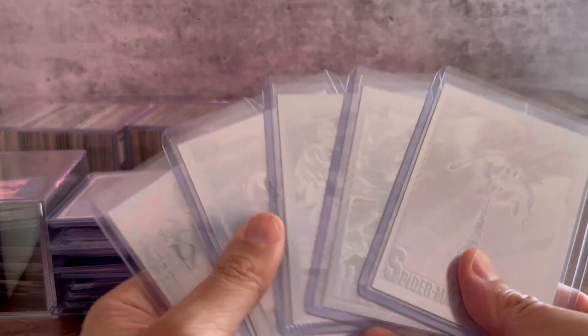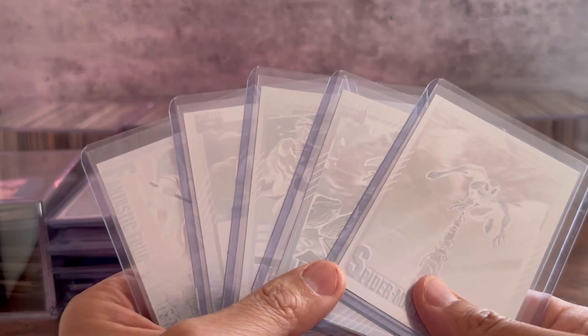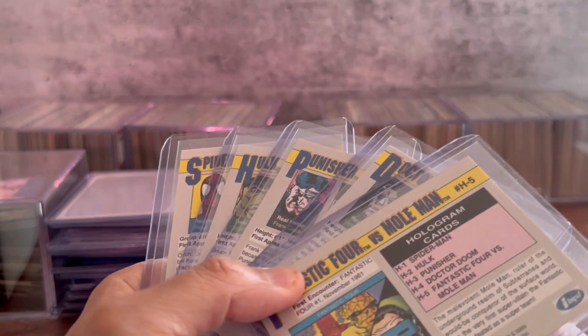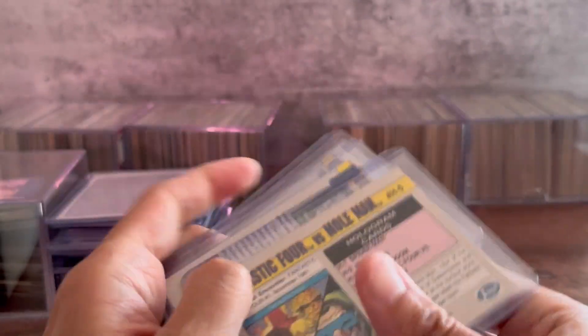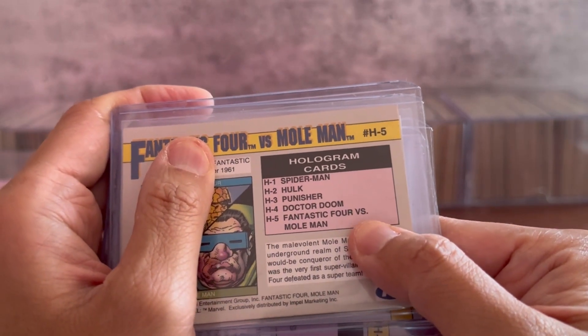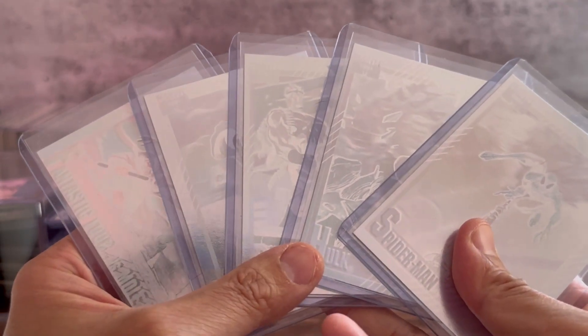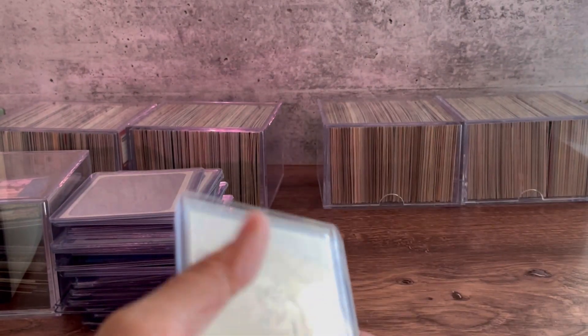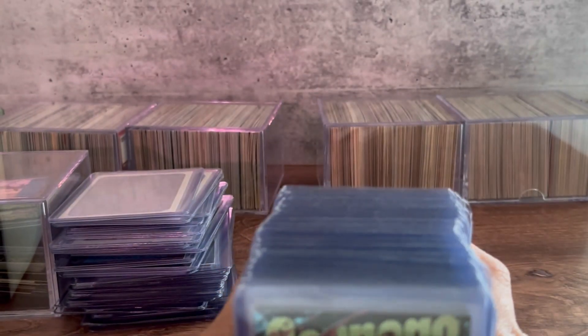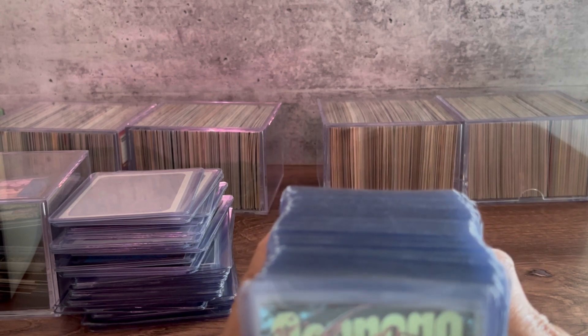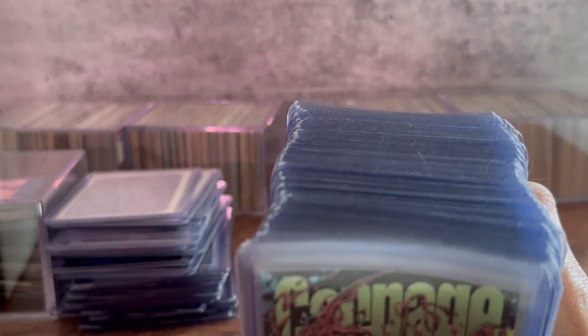Then we have another hollow foil set. These are pretty old, they're done by Impel and these are 1991. On the back of the cards sometime you get the checklist. The set has five of them and I do have the particular five that's needed for the set. This particular stack I'm showing you is comped out at about $1,105.